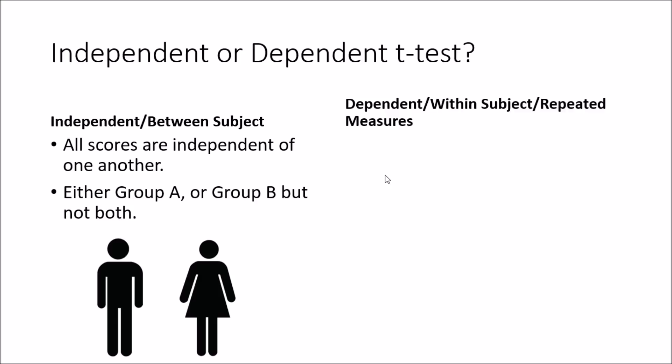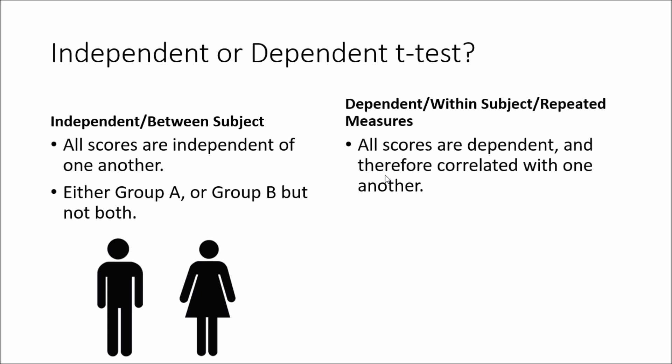With the dependent, or the within-subject, or the repeated measures t-test, we assume that all scores are dependent and are therefore correlated with one another. In other words, each participant is in both group A and group B. This is also called a repeated measures or a within-subject t-test because we make the participant do things more than once, or repeat it.